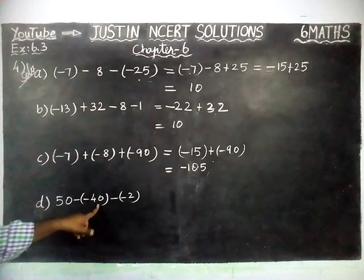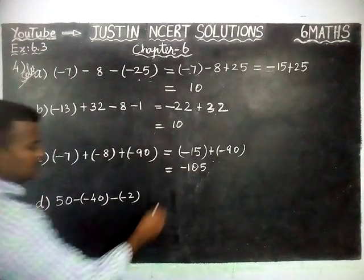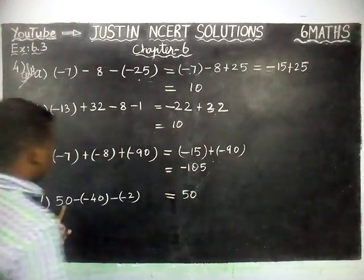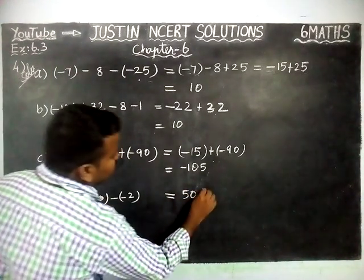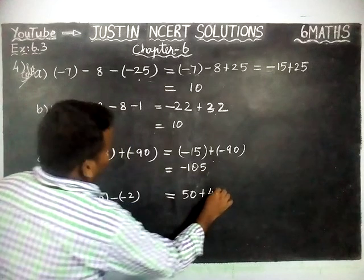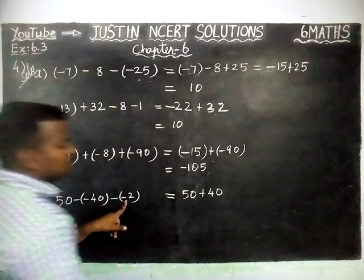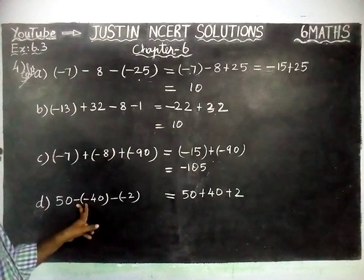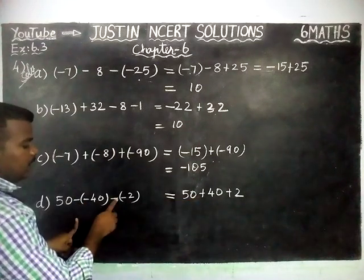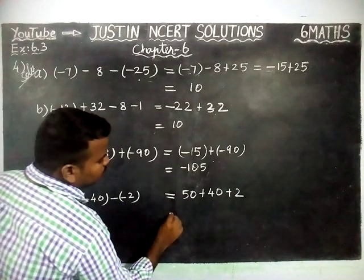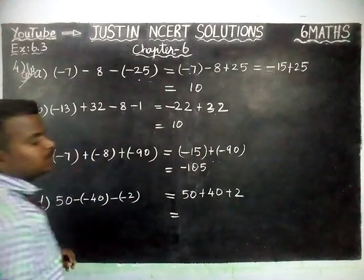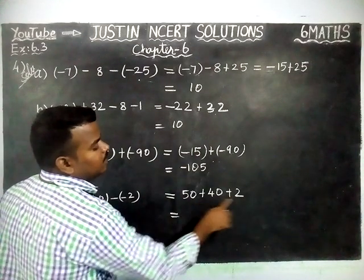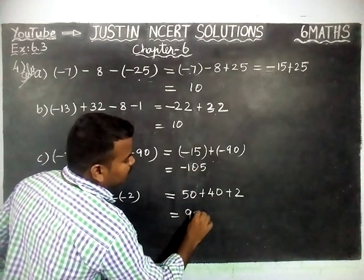Part D: 50 minus minus 40 minus minus 2. First, we multiply: minus into minus is equal to plus 40, and minus into minus is equal to plus 2. Now all three numbers are positive. We add: 50 plus 40 is equal to 90, and 90 plus 2 is equal to 92. So 92 is the correct answer.